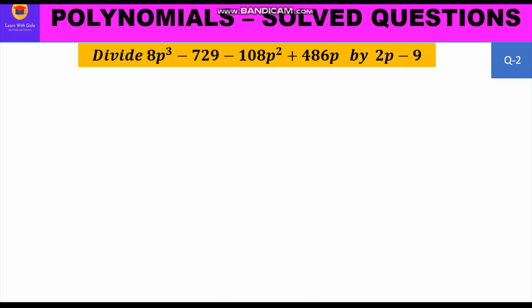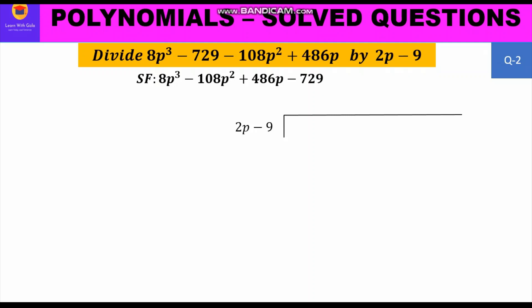Now let us move to the second question: divide 8p³ − 108p² + 486p − 729 by 2p − 9. The dividend is not in standard form as given, so we rearrange it in decreasing order of powers: 8p³ − 108p² + 486p − 729. We then set up the problem with 2p − 9 outside and the dividend inside.